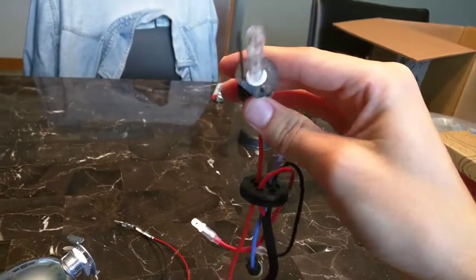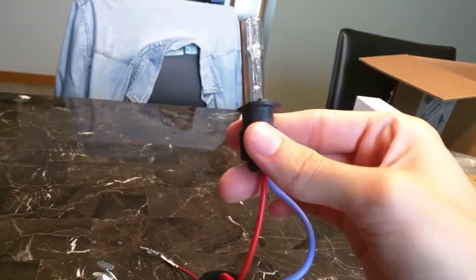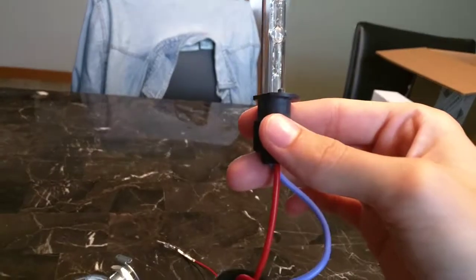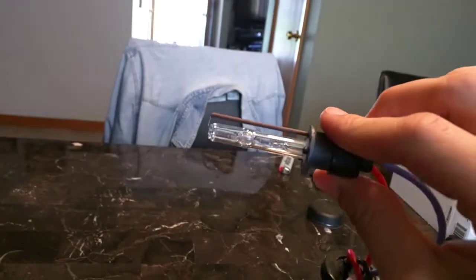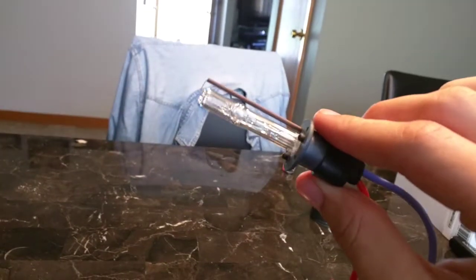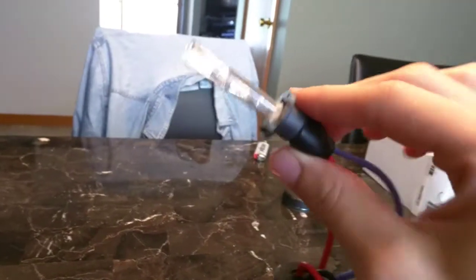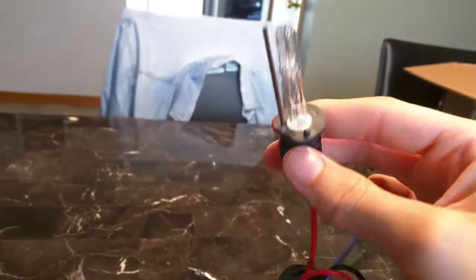This is a 35 watt, 6000K color temperature bulb. I believe they're pretty similar to a metal halide type of bulb. So it's more energy efficient, you get more light output per watt compared to halogen bulbs.